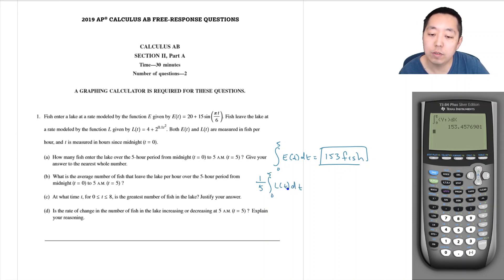Because the integral of L(t) dt is how many would be leaving, and so we're doing the average rate they wanted. The average number of fish that leave the lake per hour, so it's the average rate that they're leaving at. You sum up the total that are leaving, you divide that by five hours.